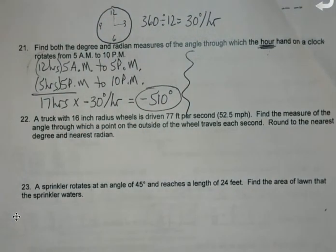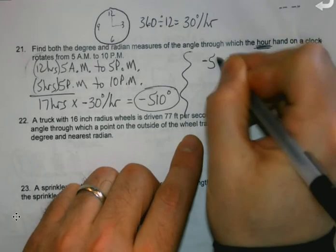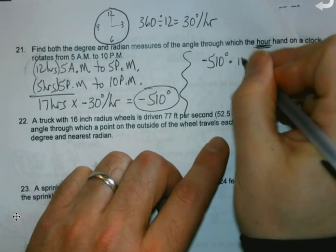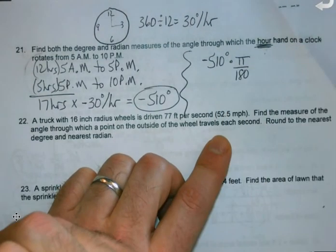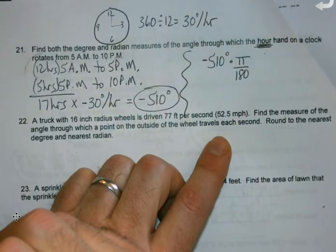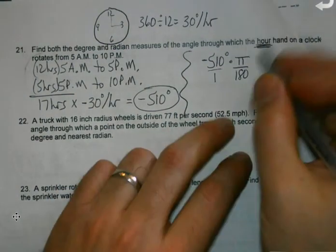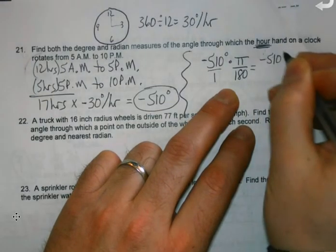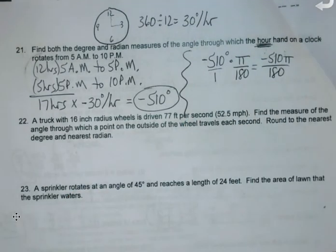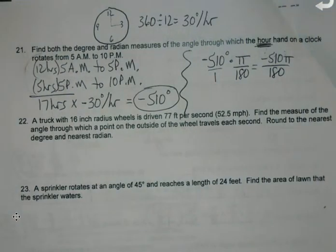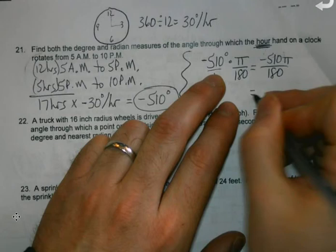Now, here's the question. I got my degree measure. How do I get the radian? How do I convert degrees into radians? I have up on the board how to do this. Negative 510 degrees times pi over 180, because when we speak in radian language, we want pi in our answer. Negative 17 pi over 6.